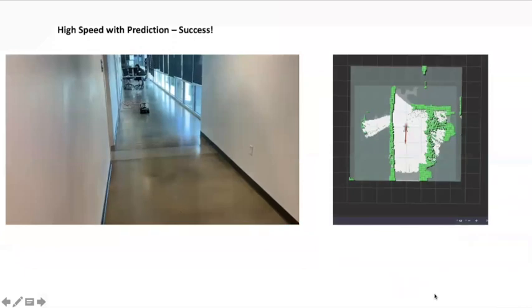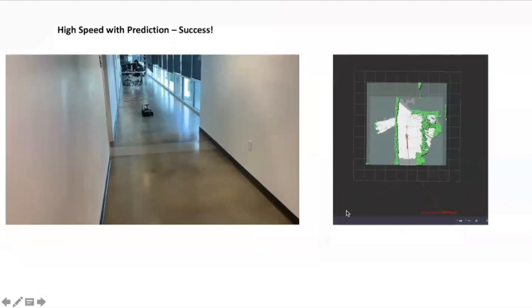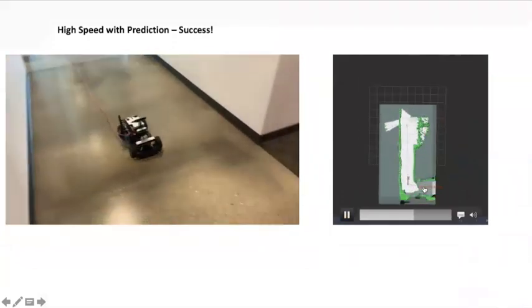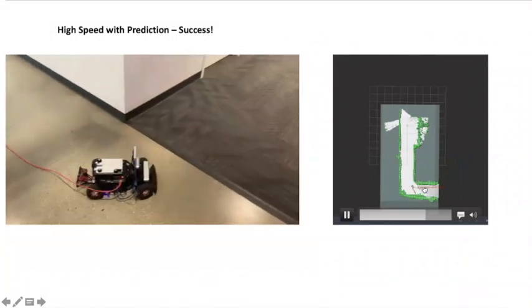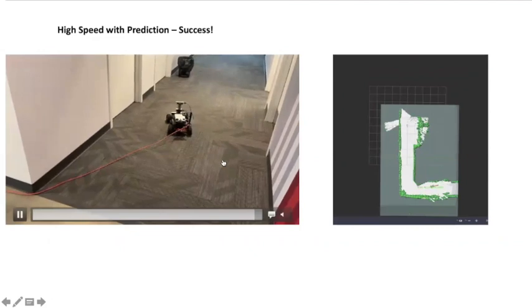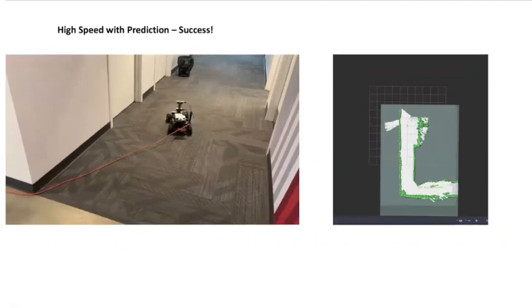Our final video demonstrates the robot traveling at a higher speed of 3 meters per second with map prediction. As you can see on the right, the gray regions represent the predicted occupancy map that extends beyond the line of sight of the sensor. Using map prediction, we're able to navigate to the goal with much smoother trajectories as well as operating at higher speeds of 3 meters per second.